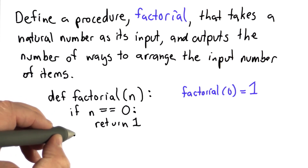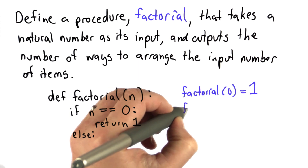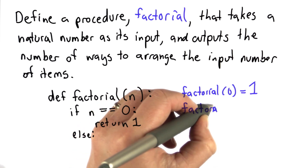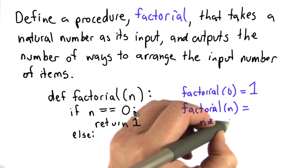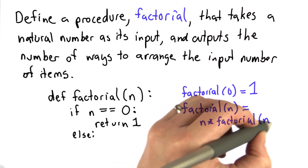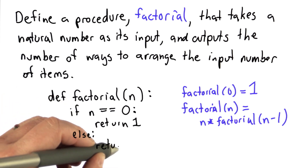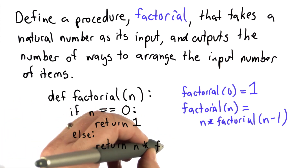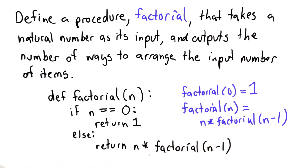When n is not equal to 0, we'll use else for that case. We have the recursive case, given by the definition that factorial of n for numbers greater than 0 is equal to n times factorial of n minus 1. So that's exactly what we do in the Python code: we'll return n times the result we get calling factorial, passing in n minus 1. This may seem strange that we're defining factorial using factorial.